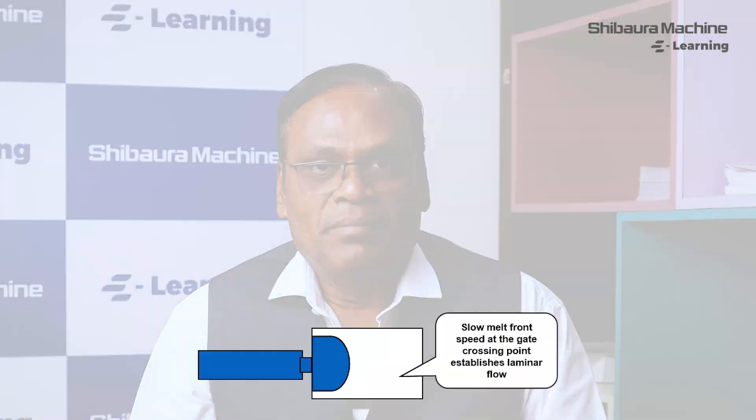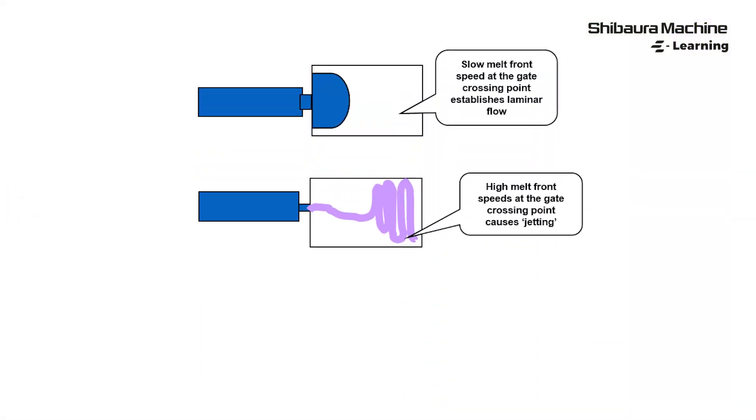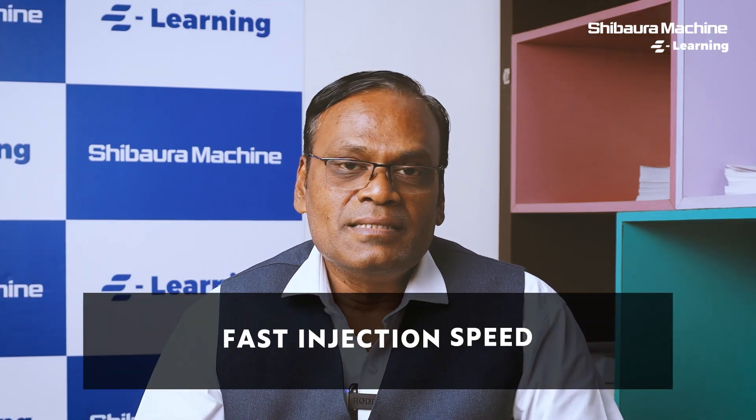When the process setting is improper on the injection molding machine, jetting is easily produced on the molded part. There are various factors causing jetting. Let us understand those factors and see how to avoid them by setting the right parameters on the injection molding machine.